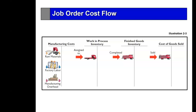In terms of T-accounts, there are three categories of manufacturing costs: raw material, direct labor (factory labor), and manufacturing overhead. They are assigned to work in process by debiting that account. When completed, you credit work in process and debit finished goods inventory for the completed cost of goods manufactured. Then when you sell it, you credit finished goods inventory and debit cost of goods sold.